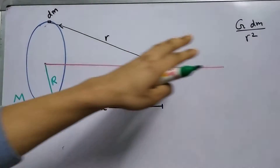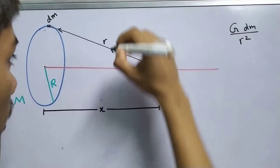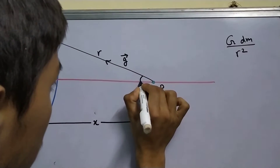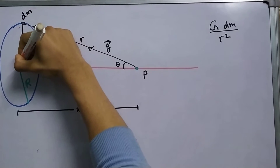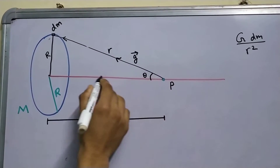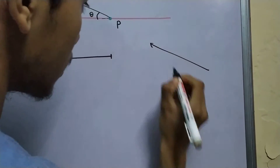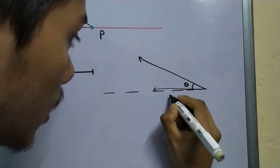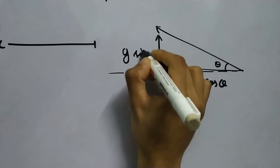Before we write down the equations, let us use symmetry to simplify the problem. Let this field be called g, and let it make an angle theta with the axis. This is x and this is R. We can resolve g into two components: the horizontal component and the vertical component. The horizontal component will be g·cos θ, and the vertical component will be g·sin θ.